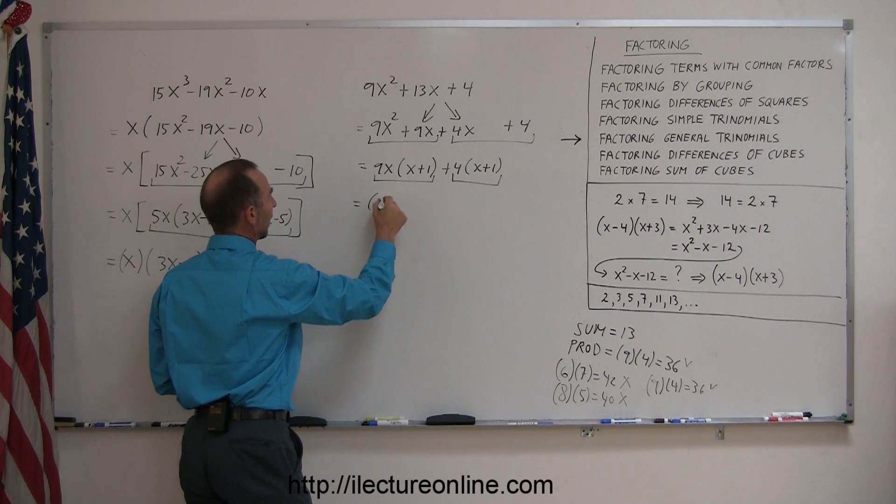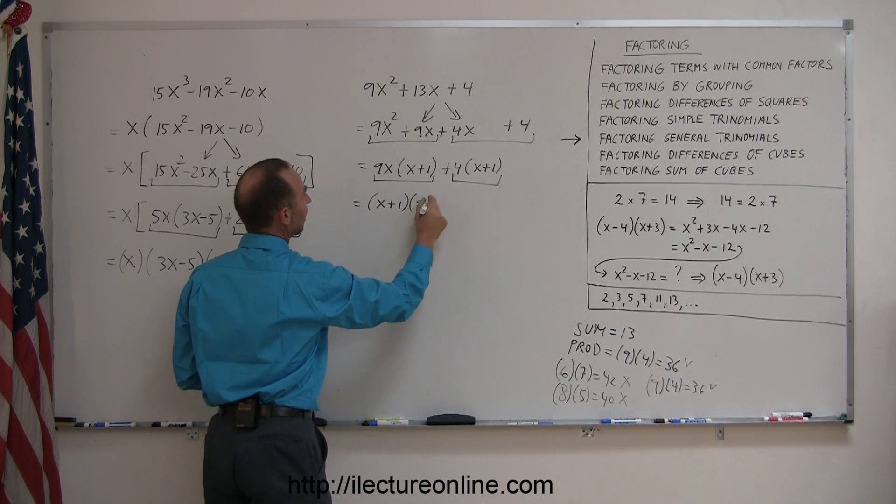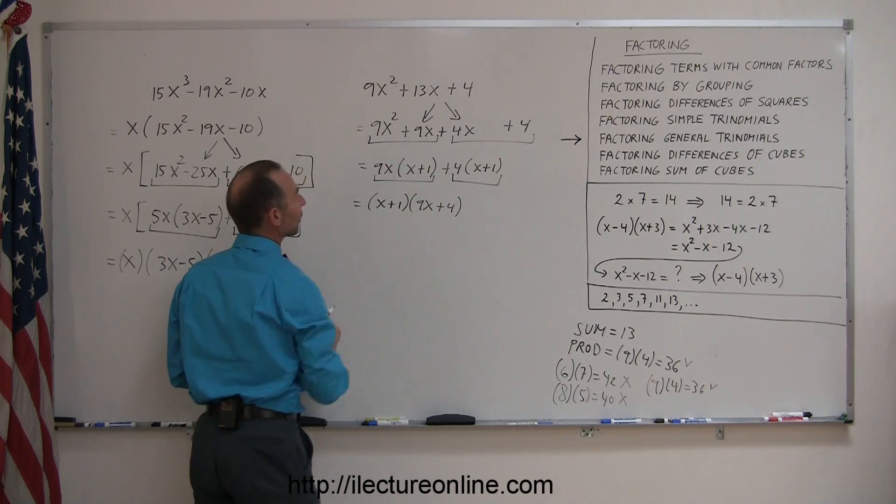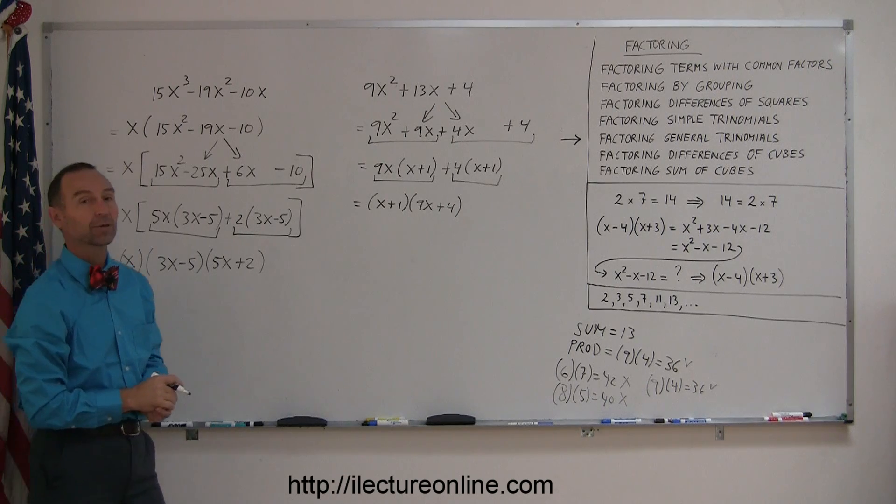So now we can look at this term and this term and realize we can factor out the common x plus 1. So this is equal to x plus 1, and you're left with 9x on the left side, and you're left with plus 4 on the right side. And there you go. There's your factored form of 9x squared plus 13x plus 4.